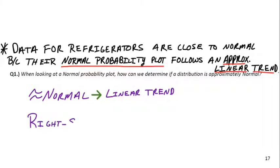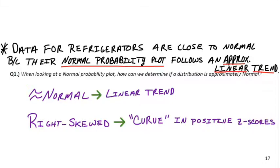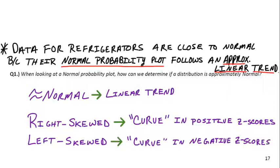If it's right skewed, you're going to see a curve. Right skewed is skewed towards the bigger numbers toward the right. So if it's right skewed, you're going to see a curve in the higher Z-scores or the positive Z-scores. And if it's left skewed, you're going to go the other way. You're going to see a curve in the lower numbers or the negative Z-scores. Stuff below the mean to see a curve.